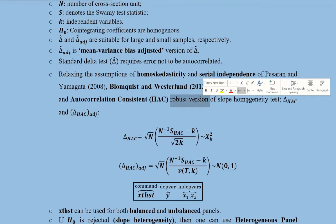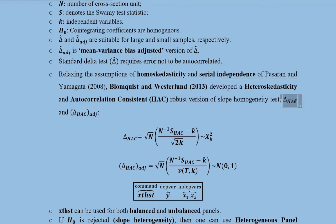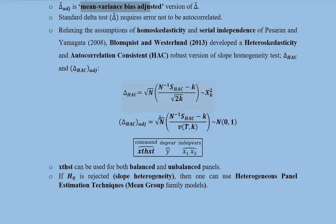This is how we denote it. And this is how we denote its adjusted version where the adjustment is mean variance bias adjustment. These are the formulas of it.